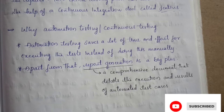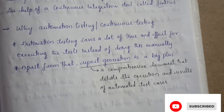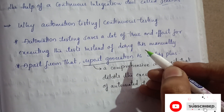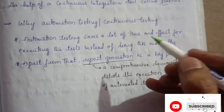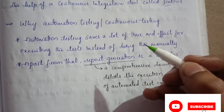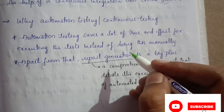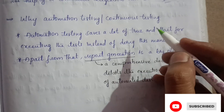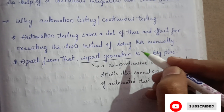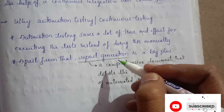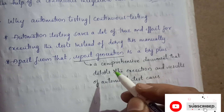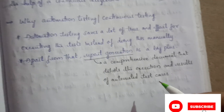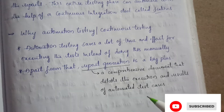Automation testing saves a lot of time and effort compared to executing tests manually. Apart from that, report generation is a big advantage — when testing is done manually, report generation is not handled automatically, but with automation testing, reports are generated by themselves. Report generation is a comprehensive document that details the execution and results of automated test cases.